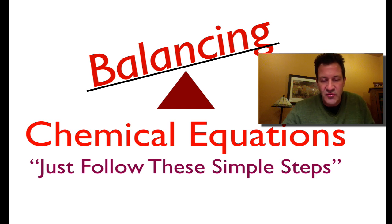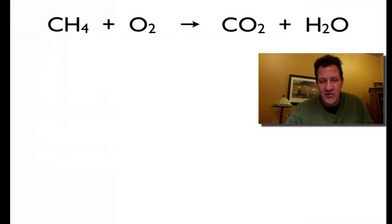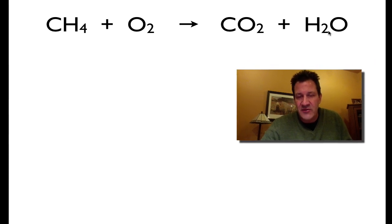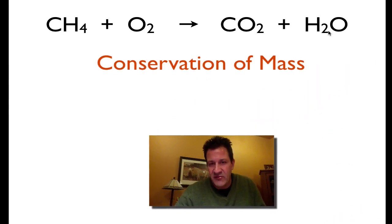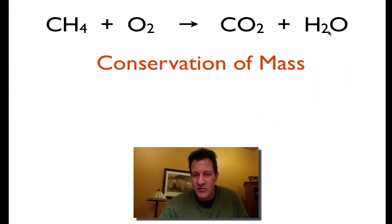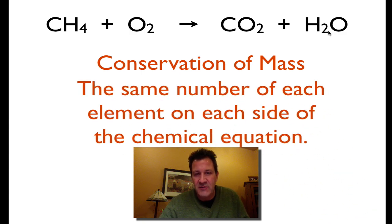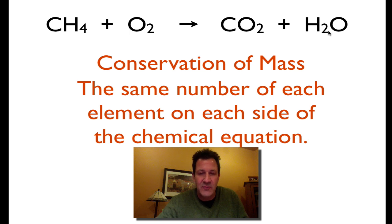In today's video, I'm going to show you how to balance chemical equations, and I'm going to show you some simple steps that if you follow, you will be successful in balancing chemical equations. We have to have the chemical equation balanced because of conservation of mass — we cannot create or destroy mass, which means we have to have the same number of each element on each side of the chemical equation. The mass on the left has to equal the mass on the right.